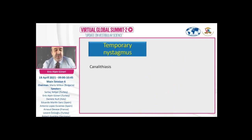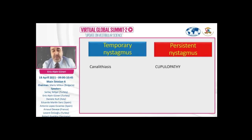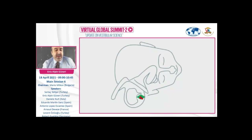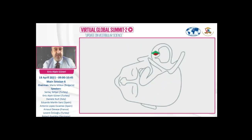Remember that transitory geotrophic direction-changing horizontal positional nystagmus is observed in canalithiasis. However, persistent nystagmus is the hallmark of cupulopathy. Cupulolithiasis or light cupula conforms the topic of cupulopathy. If the cupula is heavier than the surrounding endolymph, the particles are attached on the canal-side of the cupula and the cupula is pulled down in roll position due to gravity, resulting in persistent apogeotrophic nystagmus. During left roll, apogeotrophic nystagmus occurs again but is stronger.